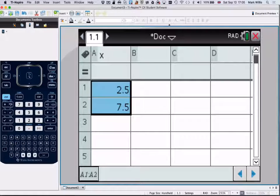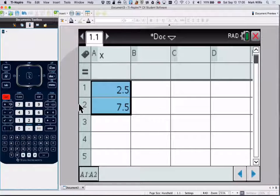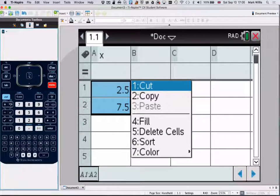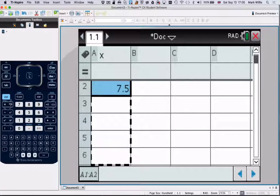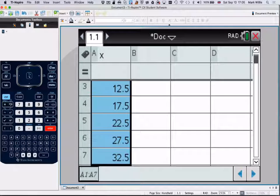Highlighting those two, and then doing Control, Menu, and then going to Fill. We need to just go down. So, we're going to be careful here to here. Press Enter. And then it will do them automatically for us. We can see we've got 12.5, 17.5, 22.5, 27.5, and 32.5.